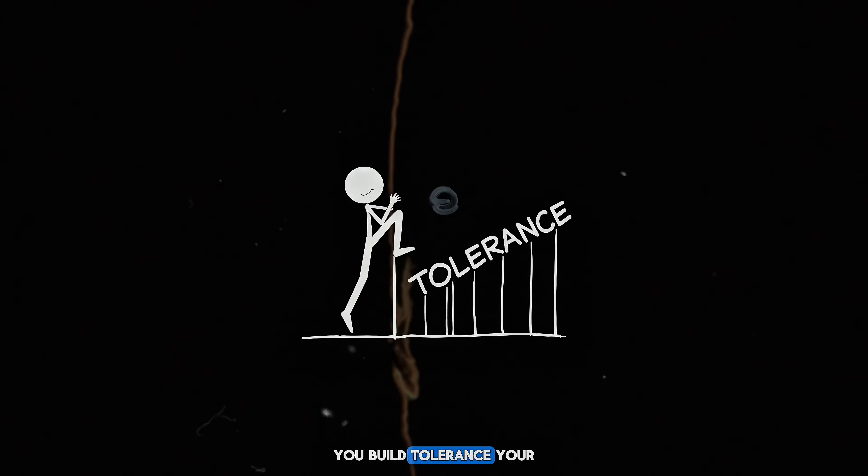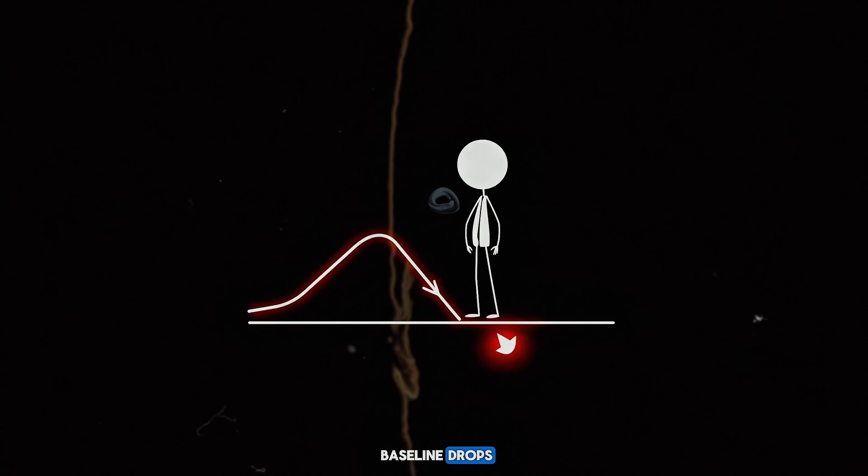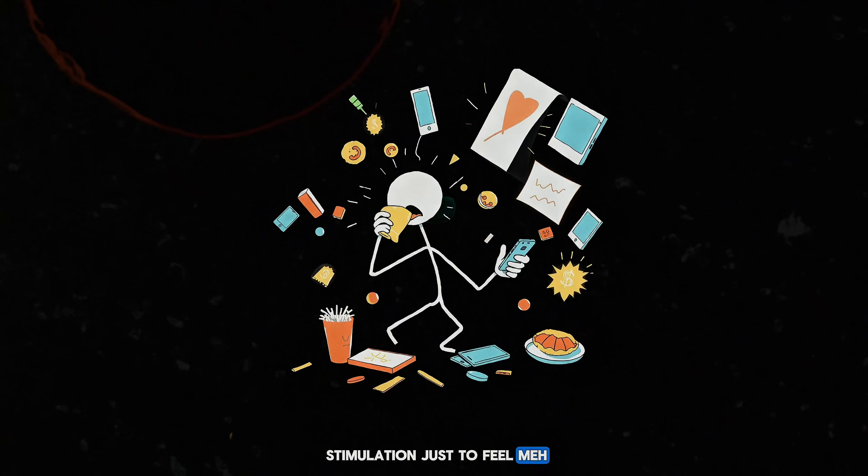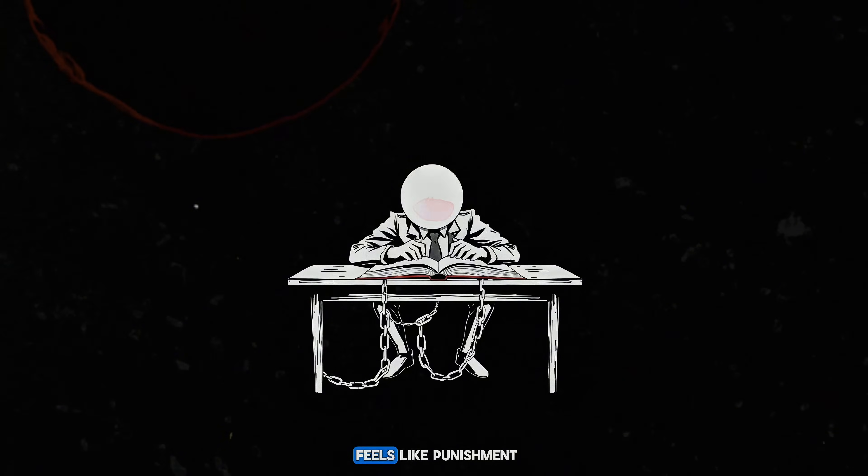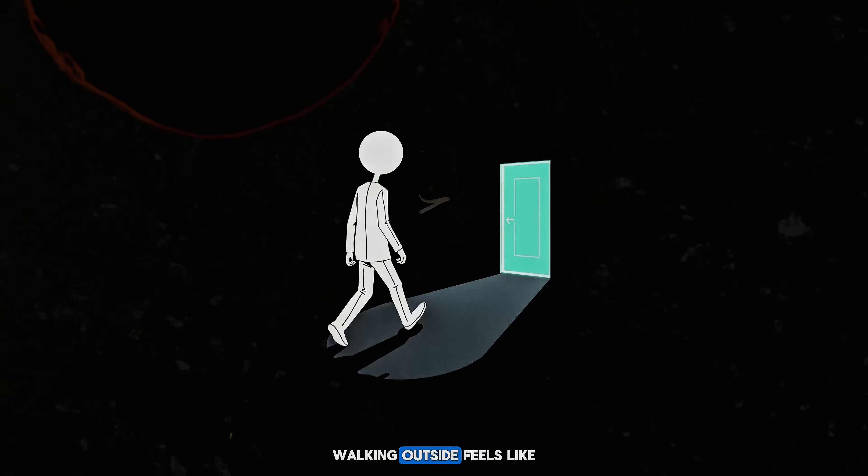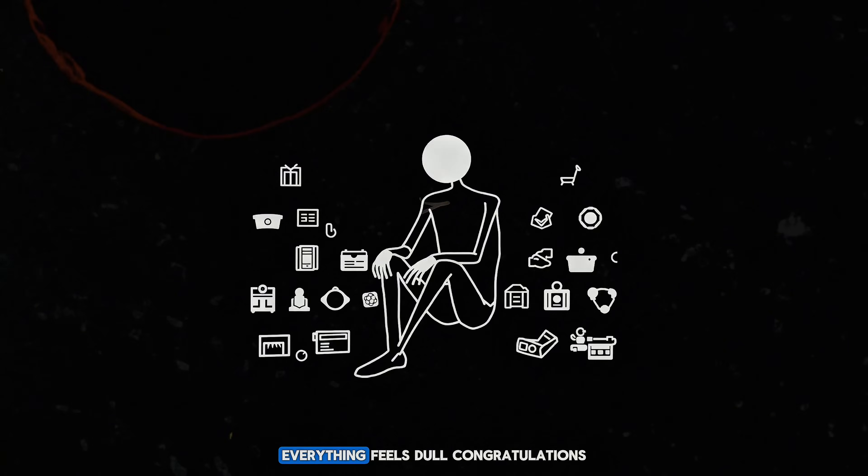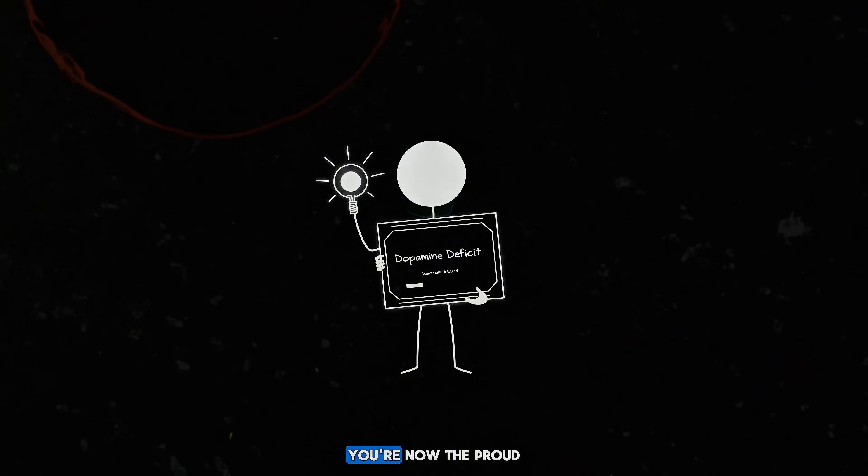You build tolerance. Your baseline drops. Now you need more stimulation just to feel meh. Suddenly reading a book feels like punishment. Walking outside feels like a chore. Everything feels dull. Congratulations. You're now the proud owner of a dopamine deficit.